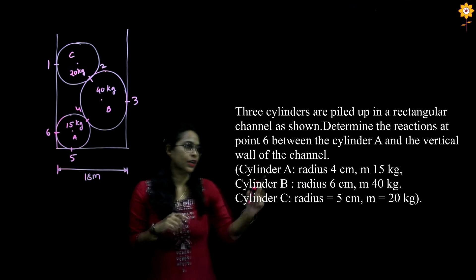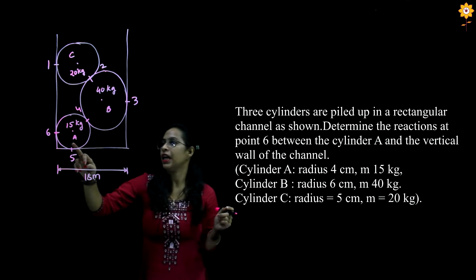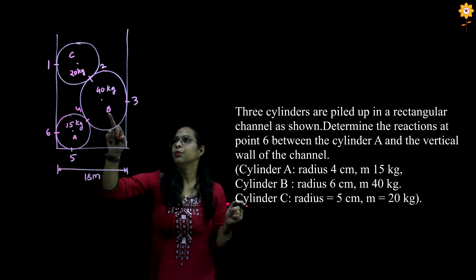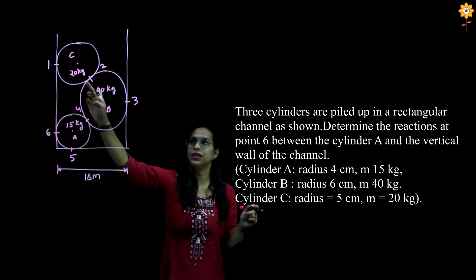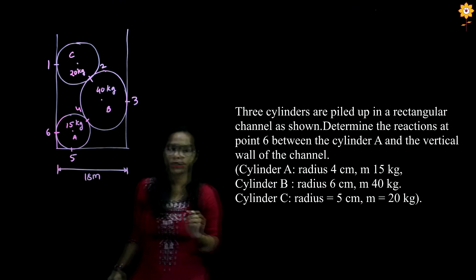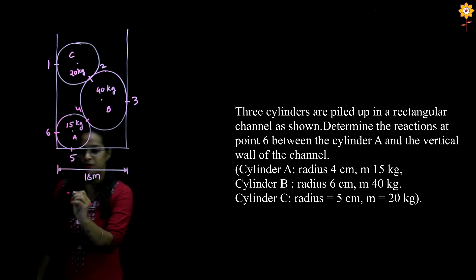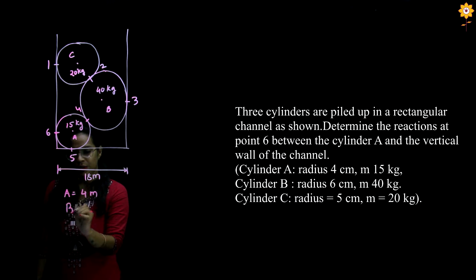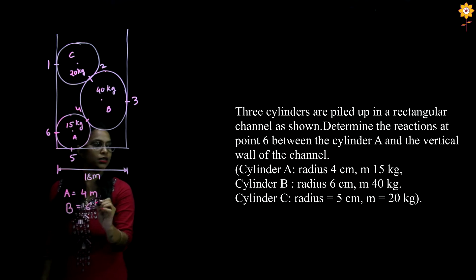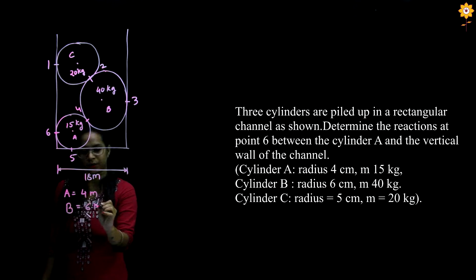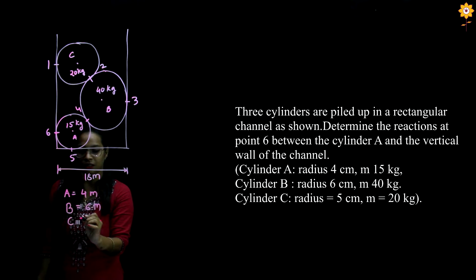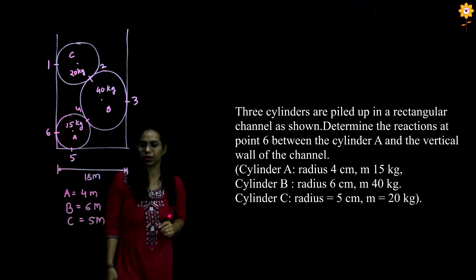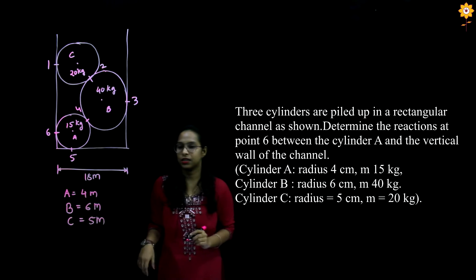The information given is: A is 15 kg, B is 40 kg, and C is 20 kg. The radii are also given — for A it is 4 meters, for B it is 6 meters, and for C it is 5 meters.